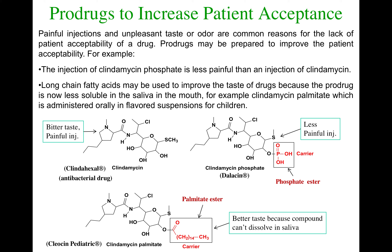This is an example of a prodrug used to increase patient acceptance by increasing the lipophilic nature of a molecule. Clindamycin is an antibacterial drug with a very bitter taste. Researchers improved the taste by including a long aliphatic carbon chain on the alcohol of clindamycin. It has a bitter taste because it can't dissolve in the saliva — you need a more water-soluble drug to dissolve in your mouth. With this modification, it doesn't dissolve and the taste is much better. You can also look at another example where they tried to increase the water solubility of clindamycin to make it a less painful intravenous injection. Please go through that example on your own time.